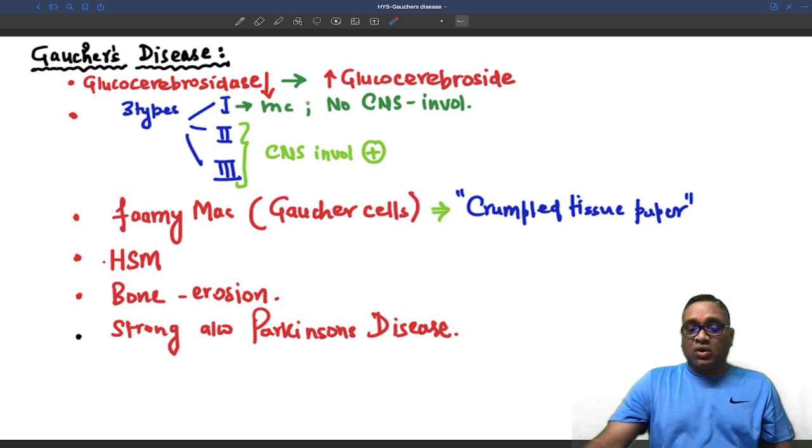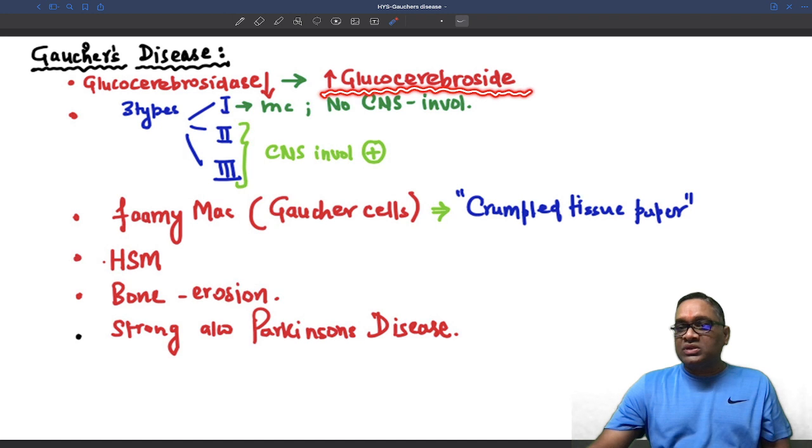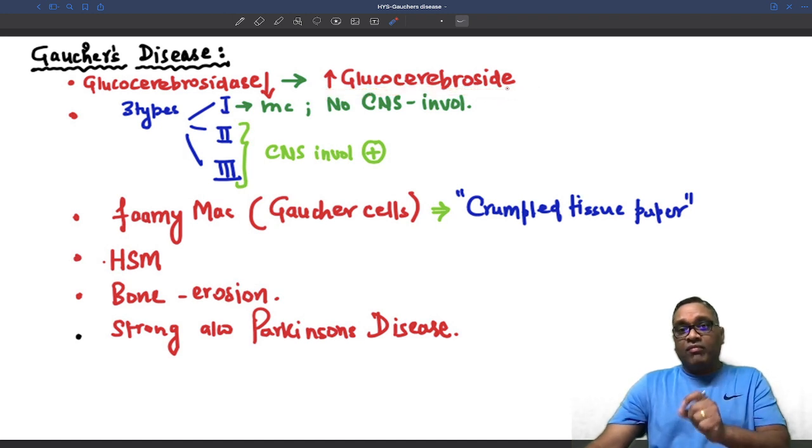This leads to a glycogen storage disorder which is Gaucher's disease, where you have excessive accumulation of glucocerebroside within the cytoplasm of macrophages.